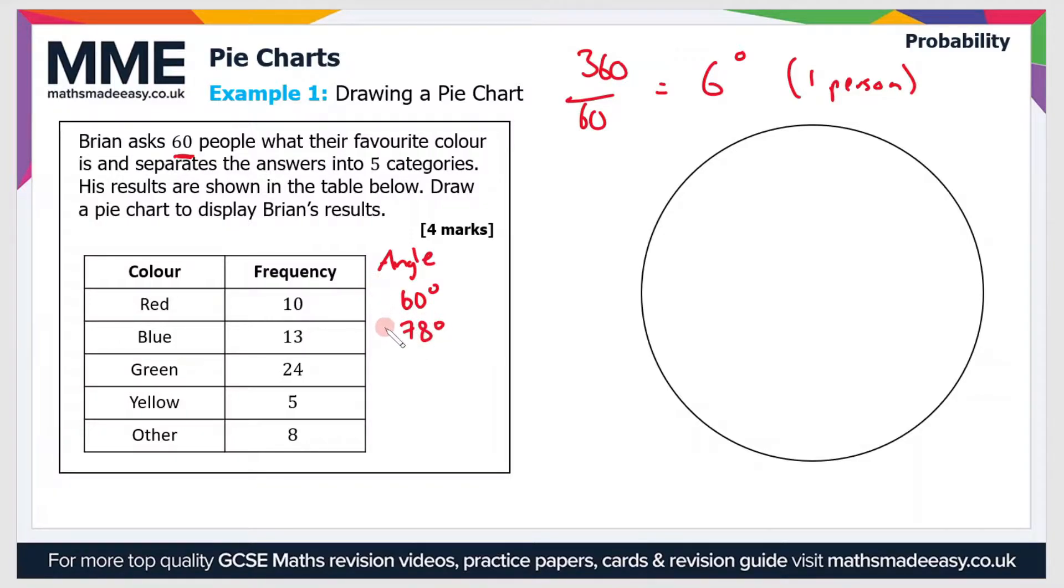And then for green, 24 times 6 which is 144 degrees. For yellow it will be 5 times 6 which is 30 degrees. And finally for the other category it will be 8 times 6 which is 48 degrees.